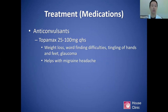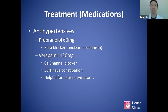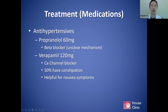Anticonvulsants are another broad category. Topamax (topiramate) can cause weight loss, word-finding difficulties, tingling of the hands and feet, and is contraindicated in individuals with glaucoma. I tend to use this when there is more of a clear-cut migraine headache component to the dizziness symptoms. Antihypertensives — I don't tend to use these as often, but neurologists tend to like verapamil, a calcium channel blocker, associated with about 50% constipation, and propranolol, a beta blocker, with an unclear mechanism.